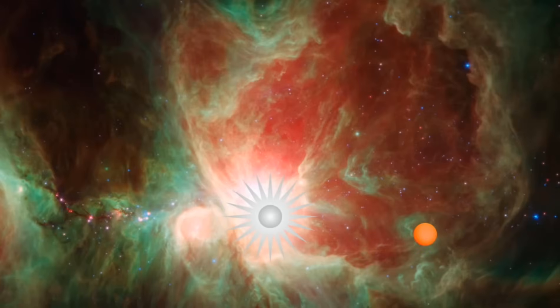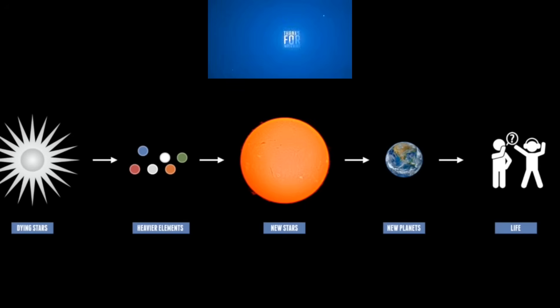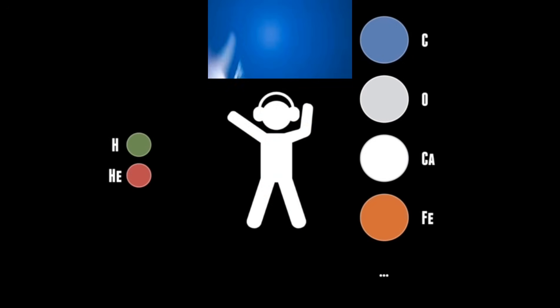The next generation of stars then forms from these enriched mixtures of elements, and therefore so do planets. It took several generations of stars to enrich our neighbourhood, so that when the Sun and the Earth were formed 5 billion years ago, they would contain enough of the heavier atoms to make living creatures. Every atom inside of the human body, apart from hydrogen and helium of course, was once part of the inside of a massive star. And from this process, it can create new life.